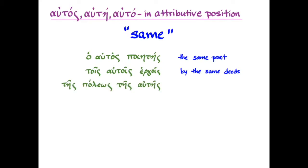And tes polios tes autos, there with the kind of attributive position where you add another article and add the modifier afterwards, that means of the same city. Or if you want to put a lot of emphasis on the fact that it's in an attributive position in sort of the sticky after it way, you could say of the city, the same one.